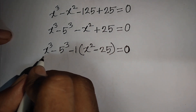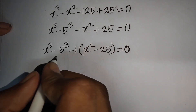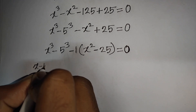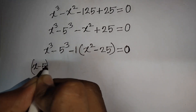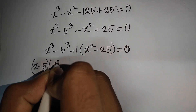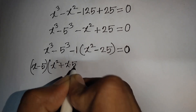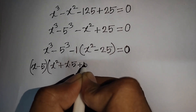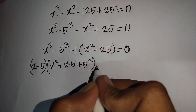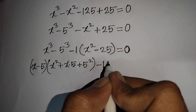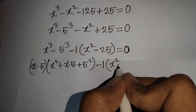Now we can apply the formula for a³ minus b³, where a is x and b is 5. According to the formula, we write (x minus 5) times (x² + 5x + 25), then minus x² minus 25.